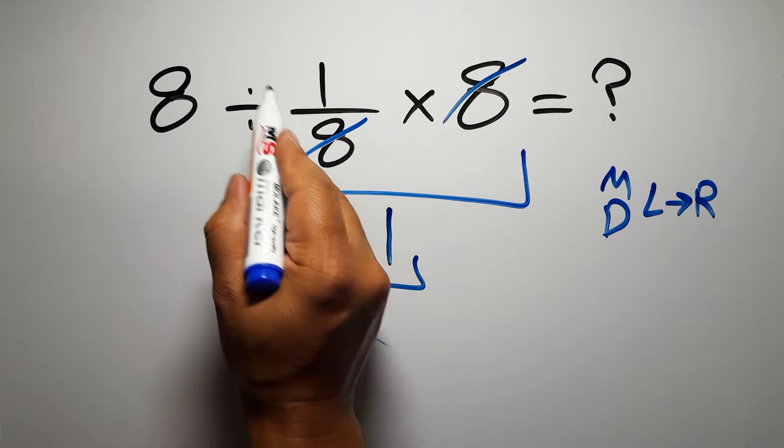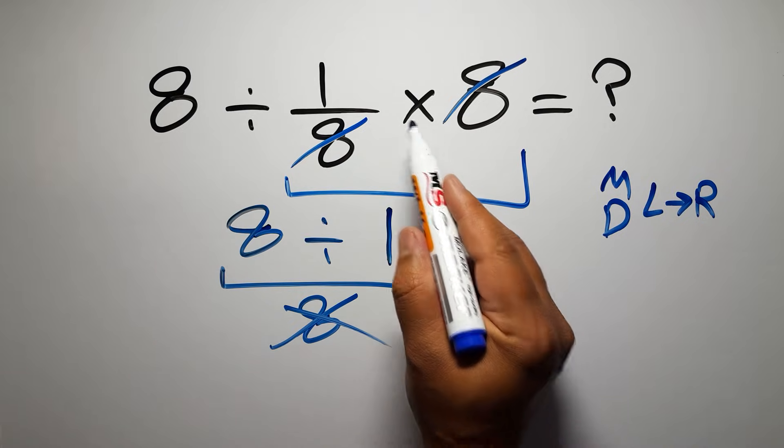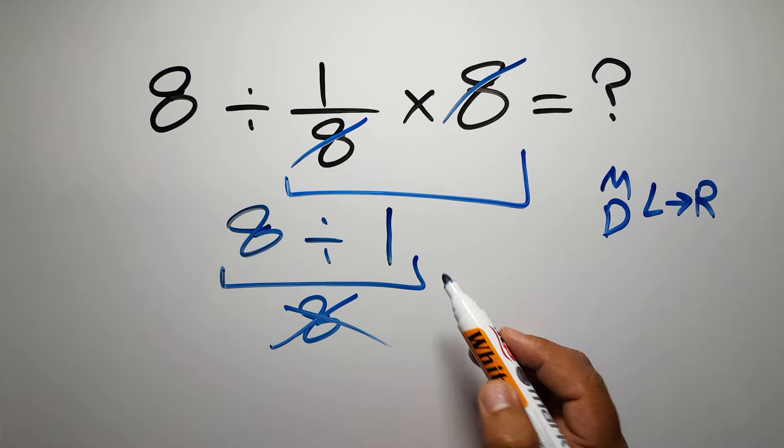So here first we have to do this division, not this multiplication. If you do this multiplication before this division, it is wrong.